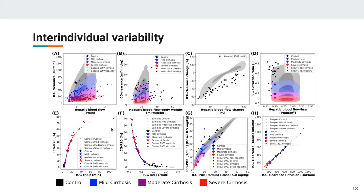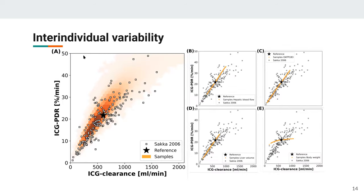Looking at the causes, parameters like blood flow, protein amount, and liver volume span a single dimension, but interestingly body weight spans an orthogonal dimension relative to the others — and this is what gives us the overall population variability as a large cloud rather than a line. This is very interesting because body weight is very easy to measure clinically, so we can reduce most of this variability in predictions — making tests like this much more accurate.